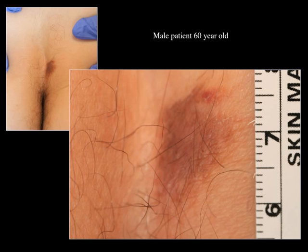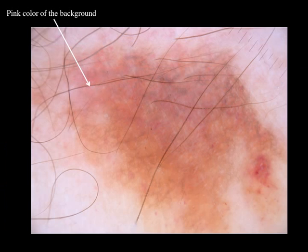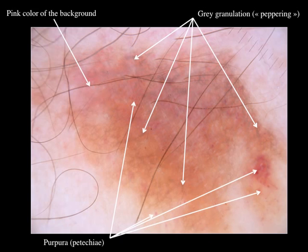This is a close-up and this is dermoscopy — contact dermoscopy with pressure. The background is pinkish. You can see grayish dots in different parts of the lesion, with sometimes a granular annular pattern. This grayish coloration is prominent and observed almost everywhere, and there are red dots that are not erased by pressure, so it's purpura.